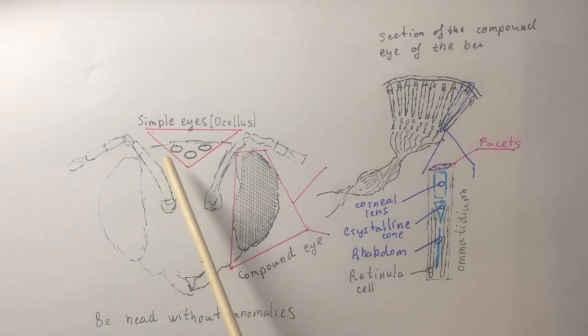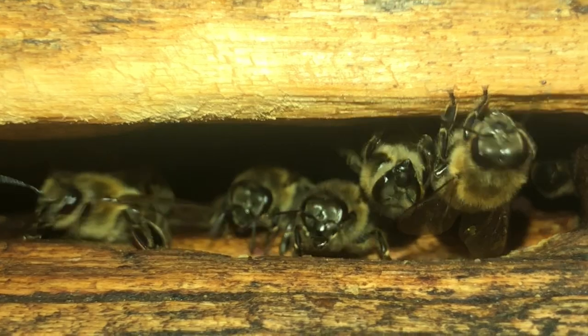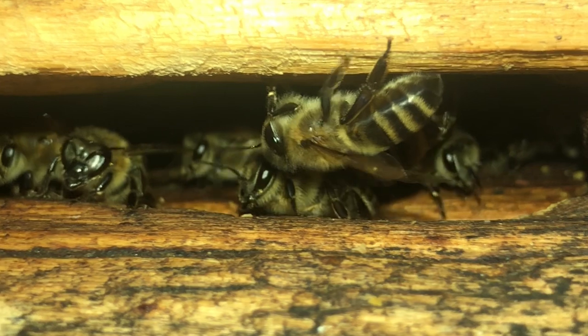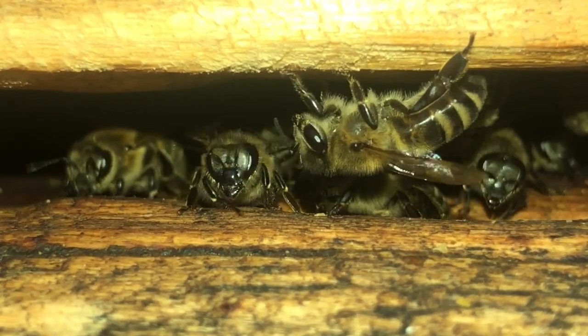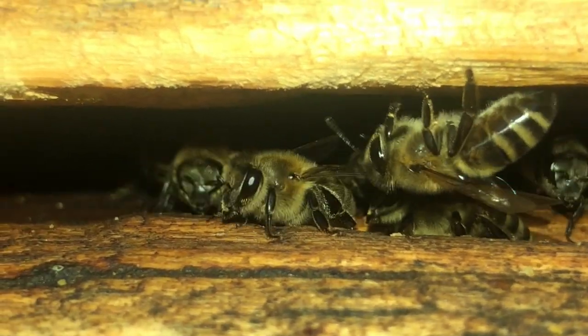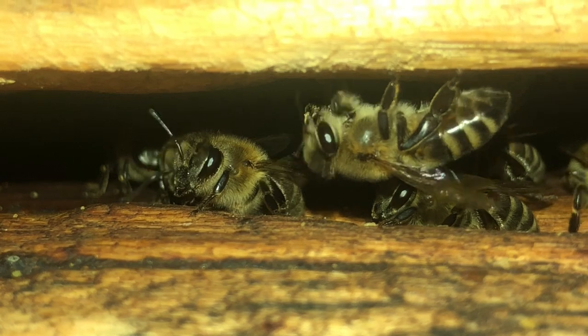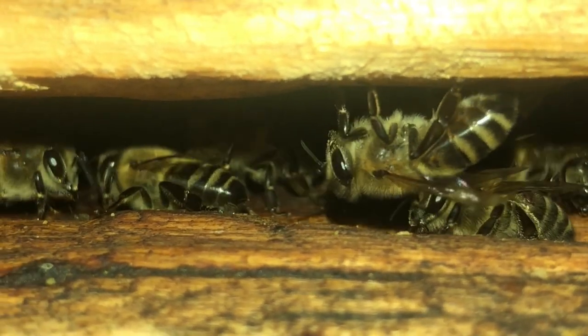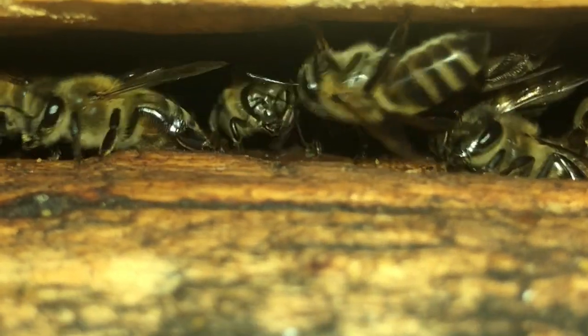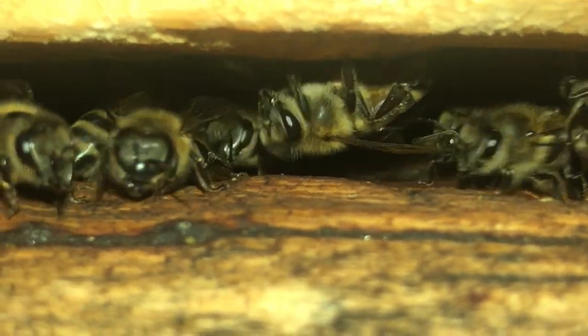The Ocelli are three simple eyes on the bee's head, arranged in a triangle on the vertex. They are needed for spatial orientation and quick response to changes in light. They help determine the direction of flight, which is important for stabilizing flight and navigating while moving.